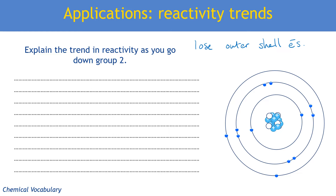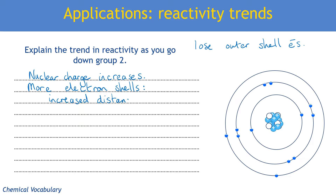We need to consider the electrostatic attractions and the factors we discussed: distance, charge, and shielding. One thing that changes going down the group is nuclear charge — the number of protons in the nucleus increases. However, this would in theory make the electrons more strongly attracted to the nucleus, so we need to look at what else changes. There are more electron shells, and this means there is an increased distance between the outer shell electrons and the nucleus.